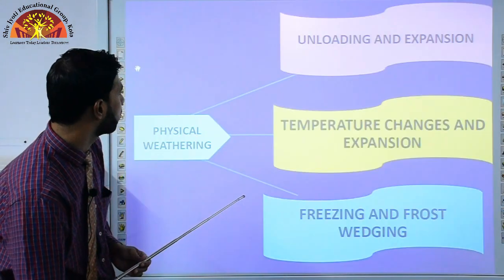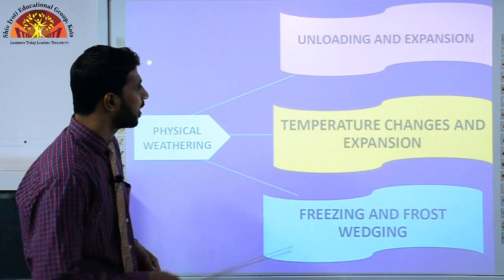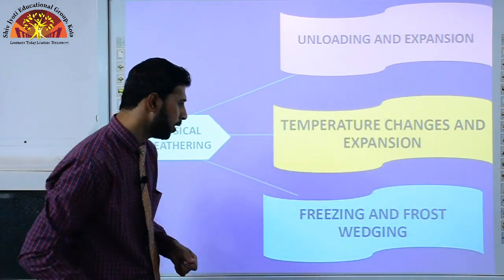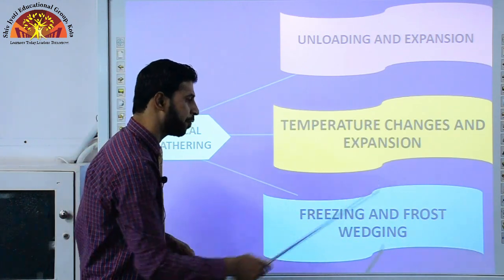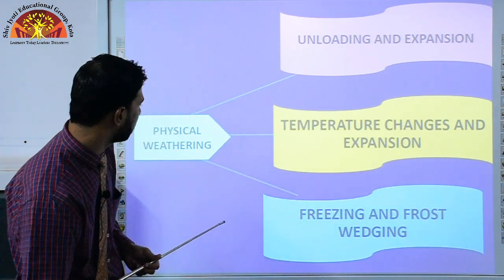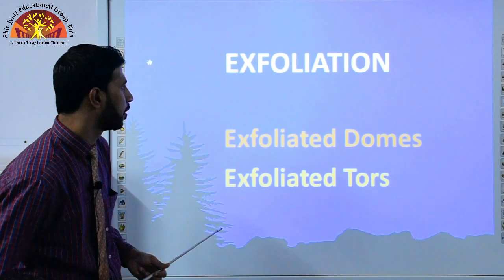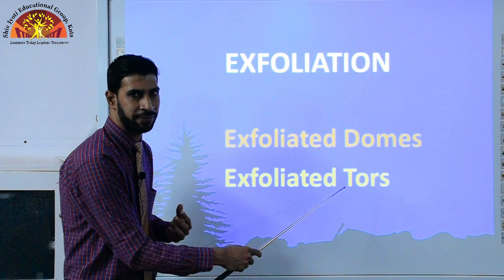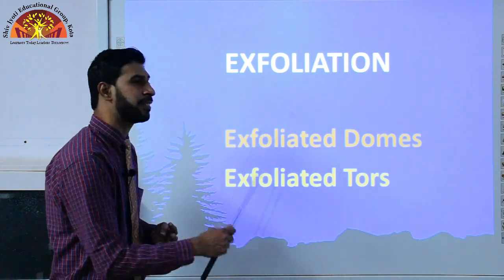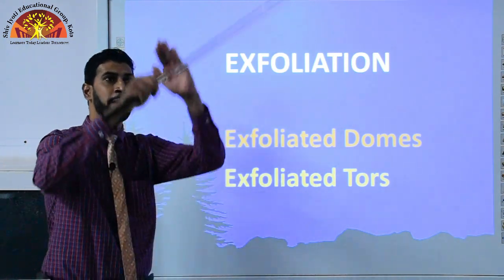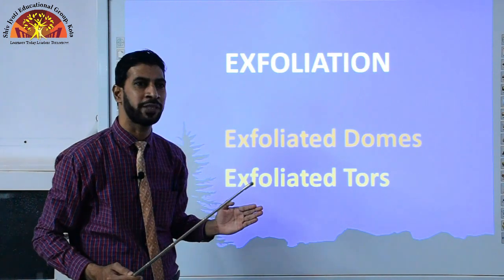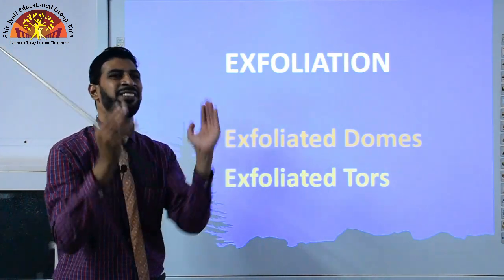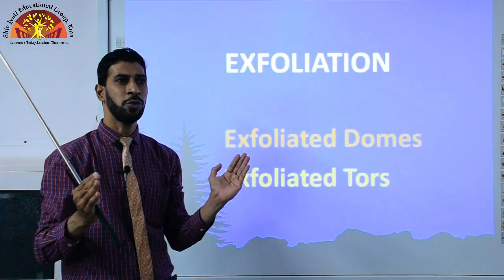Physical weathering includes unloading and expansion, temperature changes and expansion, and freezing and frost action. It results in exfoliated domes and exfoliated tors — dome-shaped hills where rocks break and scatter, and tors which are structures in line.